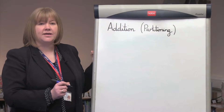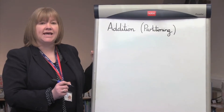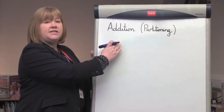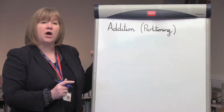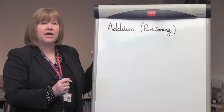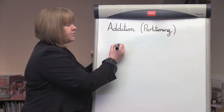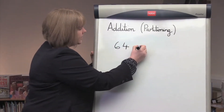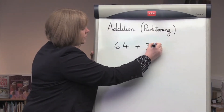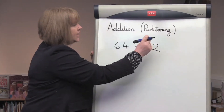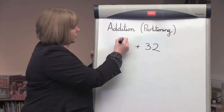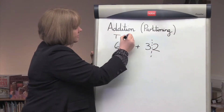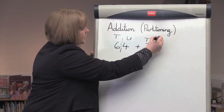Hello, my name is Mrs Flack. I'm the Deputy Head at Aldington Primary School and today I'm going to show you a method — addition through partitioning — that will hopefully help you support your children at home. If we start off with the question 64 add 32, if we're partitioning we're breaking up the number into the tens and units, thinking about the columns that the numbers are in.